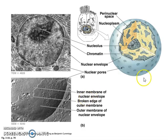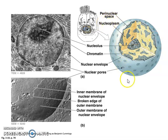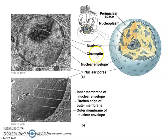Here we see a nucleus, and we need to understand that it actually has a double membrane that surrounds it and separates the contents of the nucleus, called nucleoplasm, from the contents of the rest of the cell, which is cytoplasm. We need a method to allow things to go inside and outside of the nucleus, because we have to go in and unlock the genes in the chromosomes, which are in the form of chromatin, and then take the instructions of the genes out to the ribosomes in the cytoplasm.